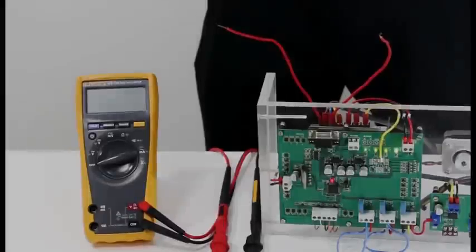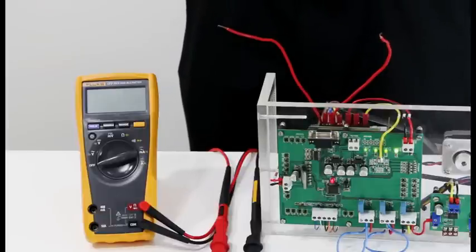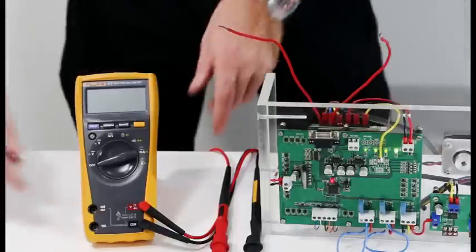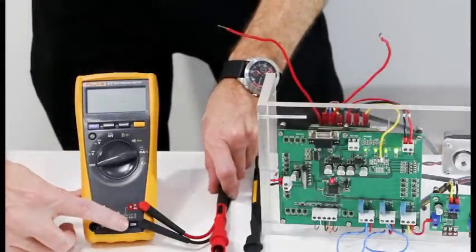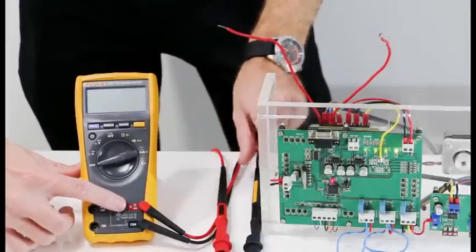The first function that I'm going to show you is how to take a voltage AC measurement and secondly how to measure frequency. As you can see, my black test lead is in my common port and my red test lead is in my function port.